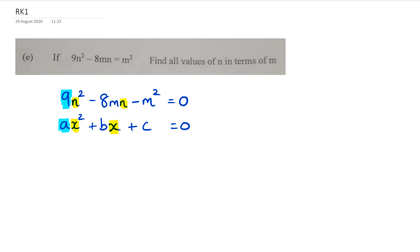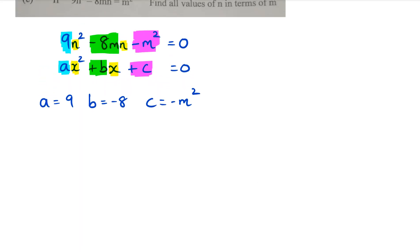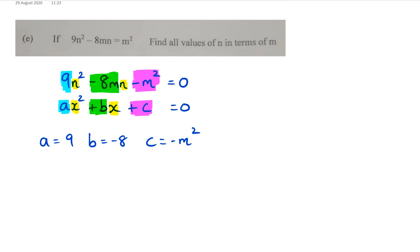So that means the a value is going to be 9, the b value is going to be negative 8m - I have to include the m in this case - and finally the c value is going to be negative m². So I've got a equals 9, b equals minus 8m, and c equals minus m².